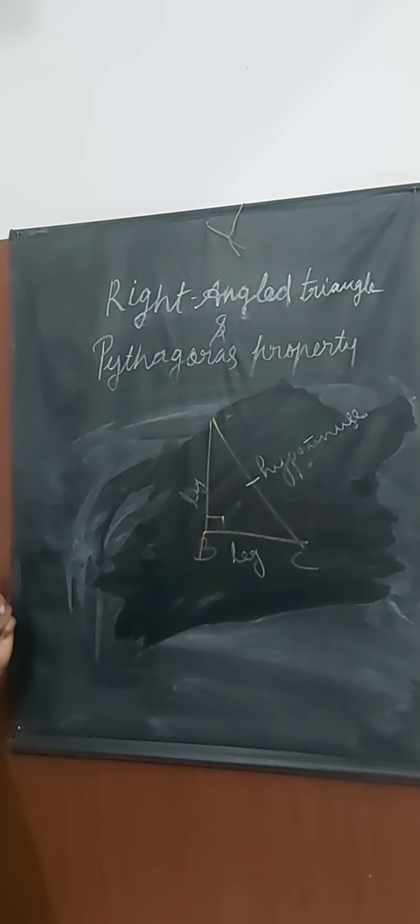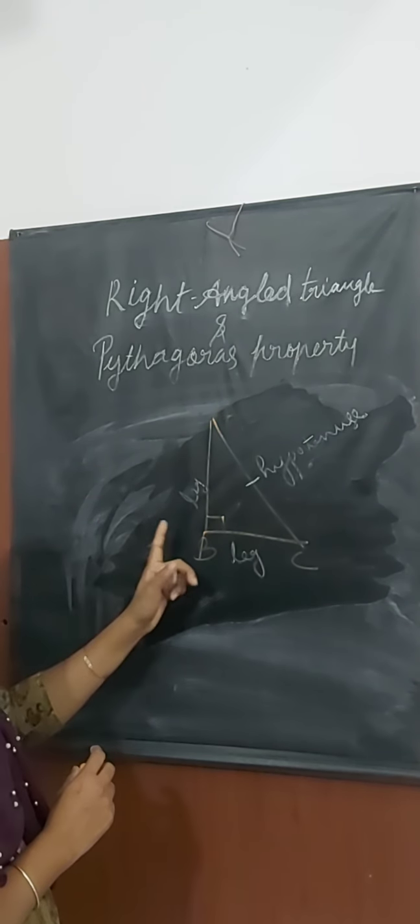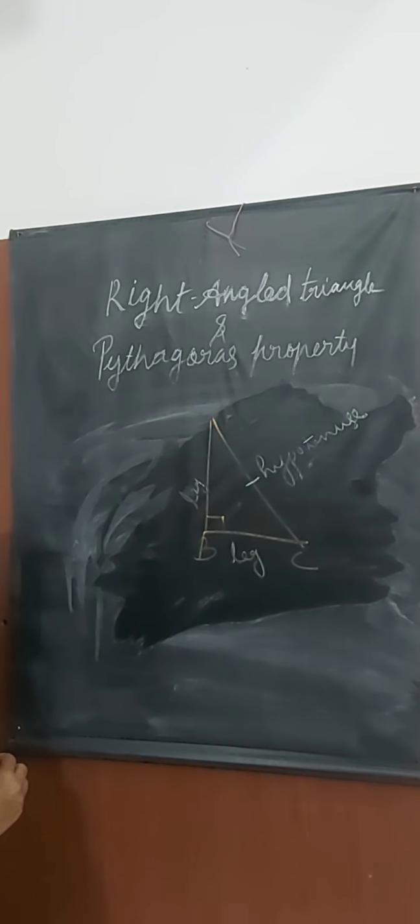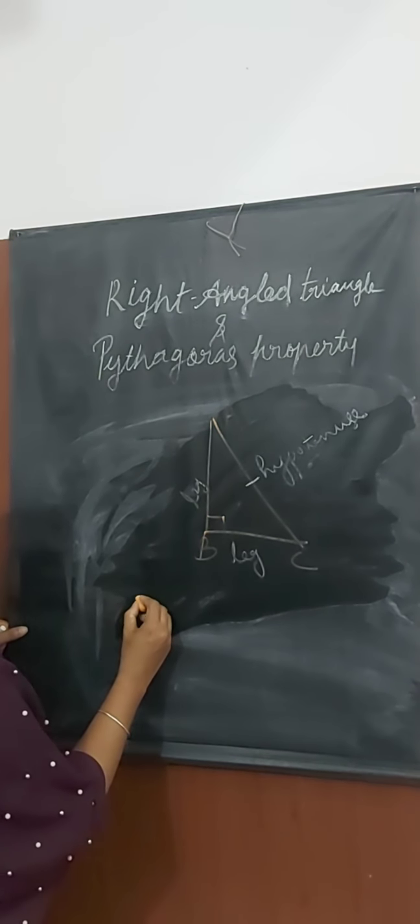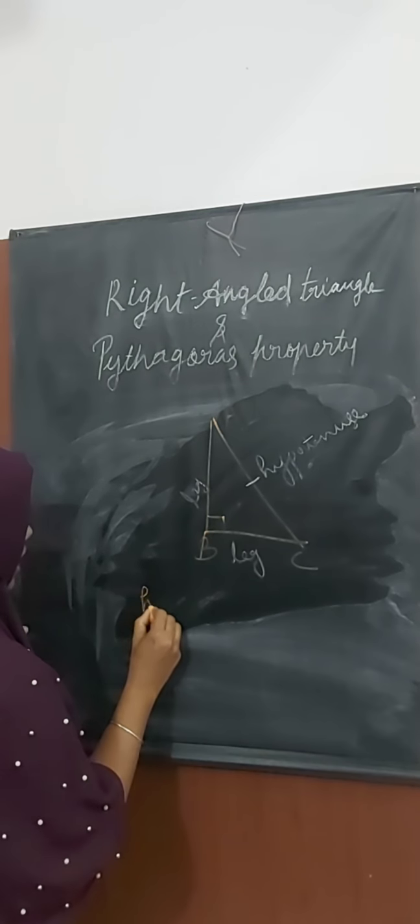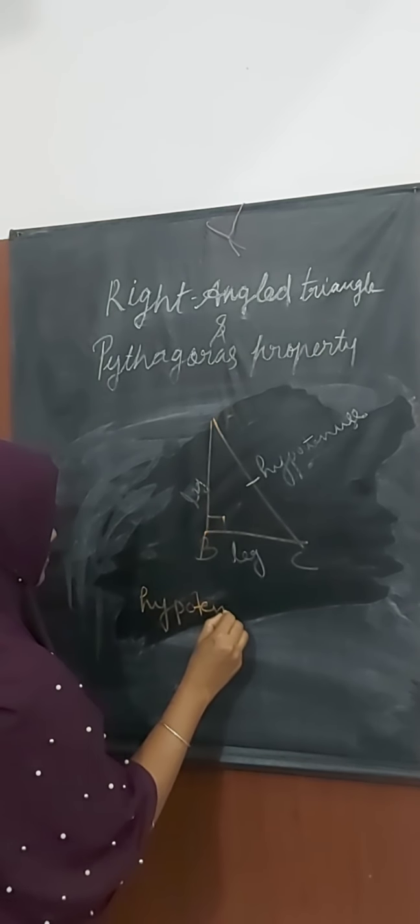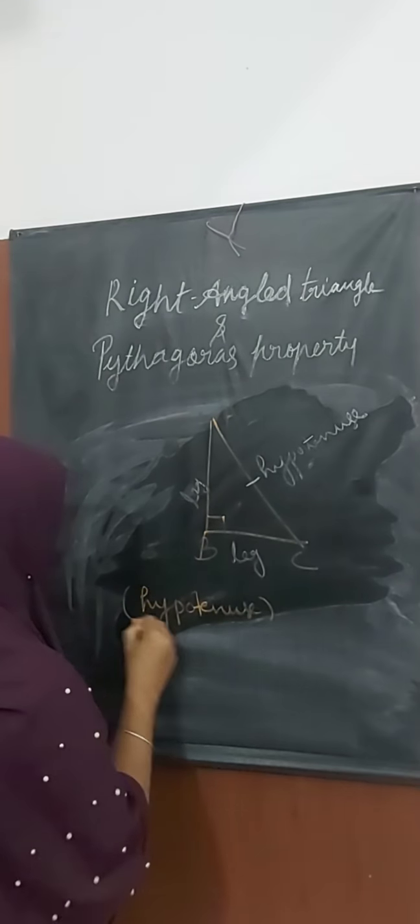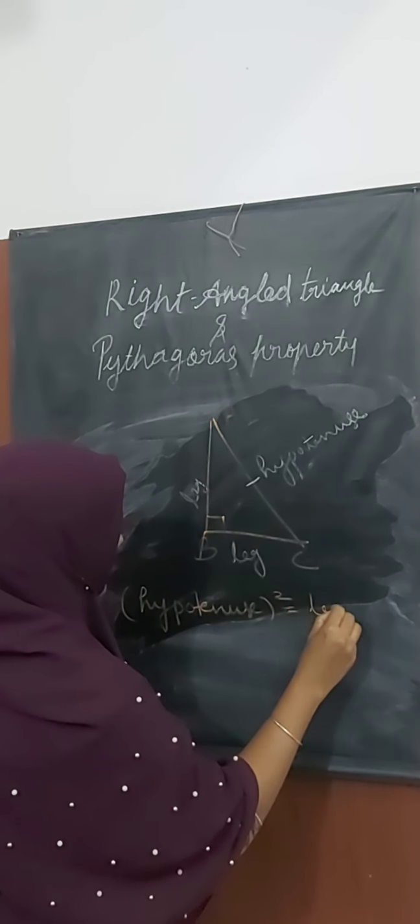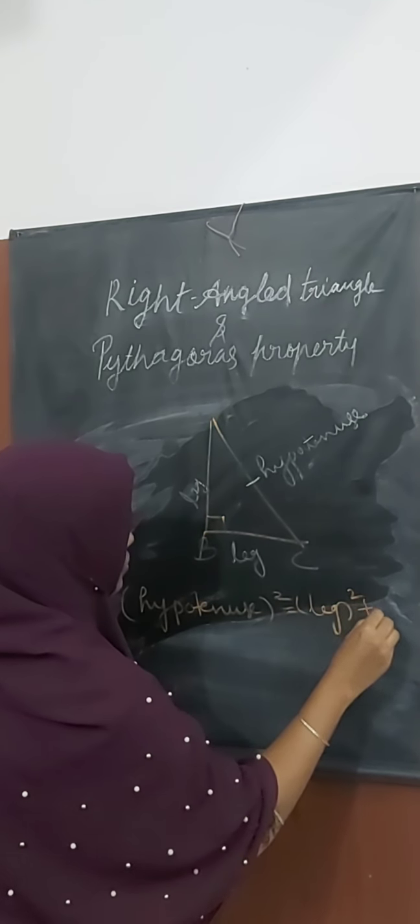Next we discuss Pythagoras property. Pythagoras property holds only in right angle triangles. Pythagoras property is hypotenuse square equals leg square plus leg square.